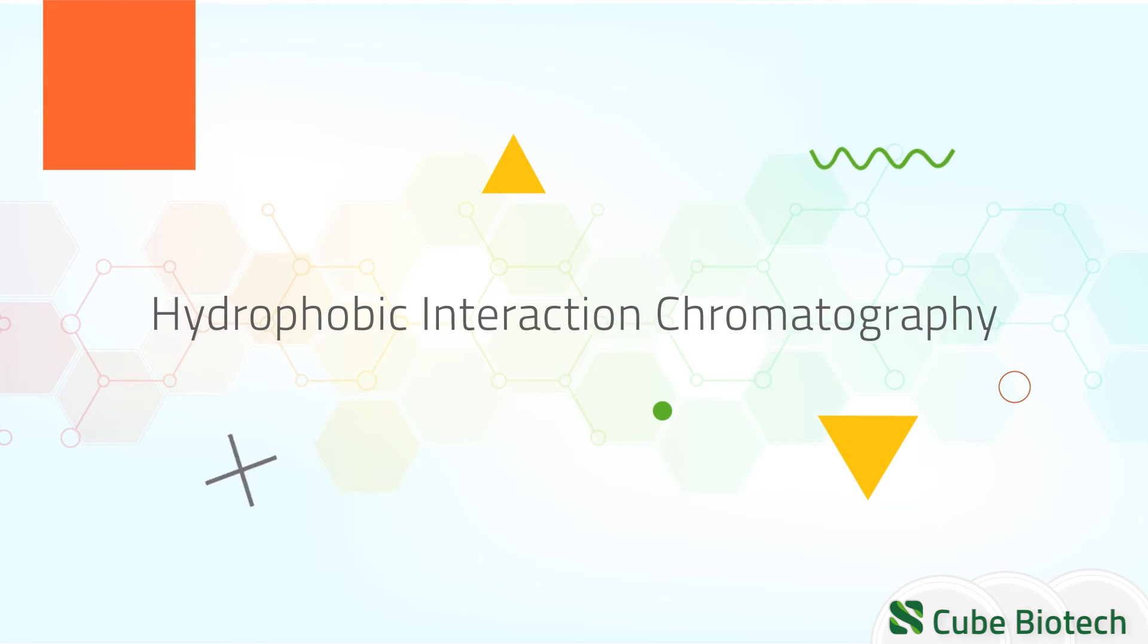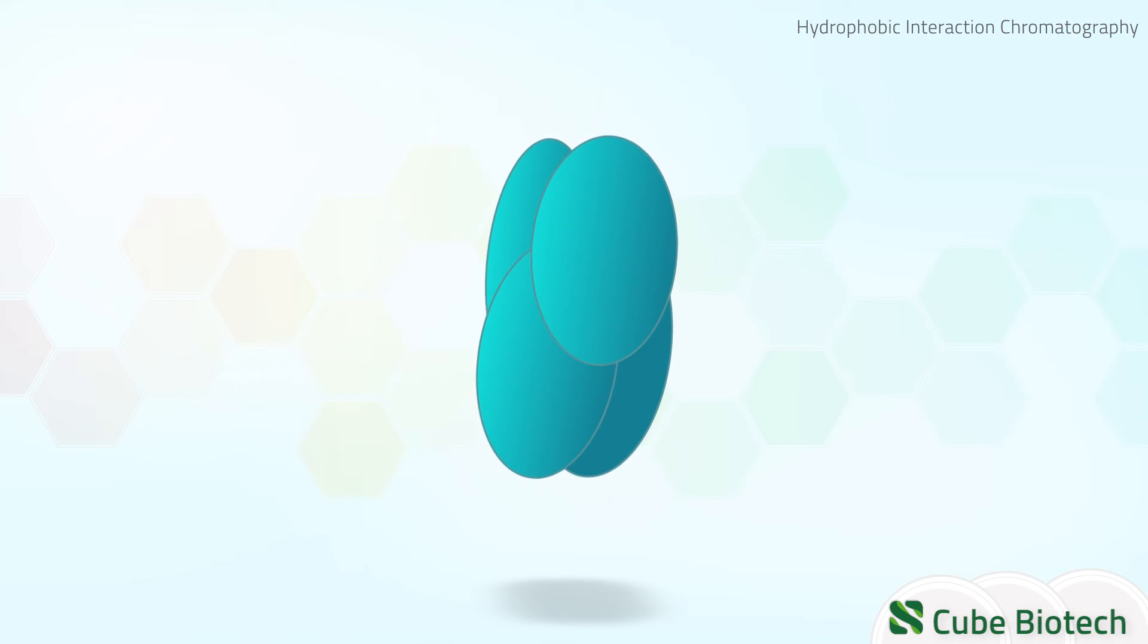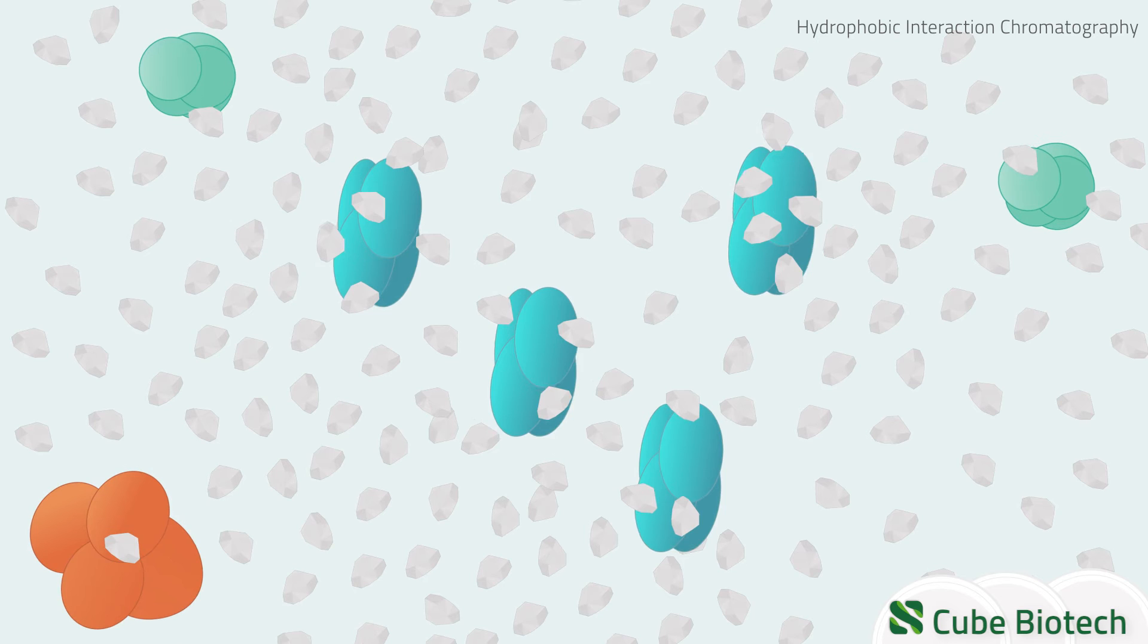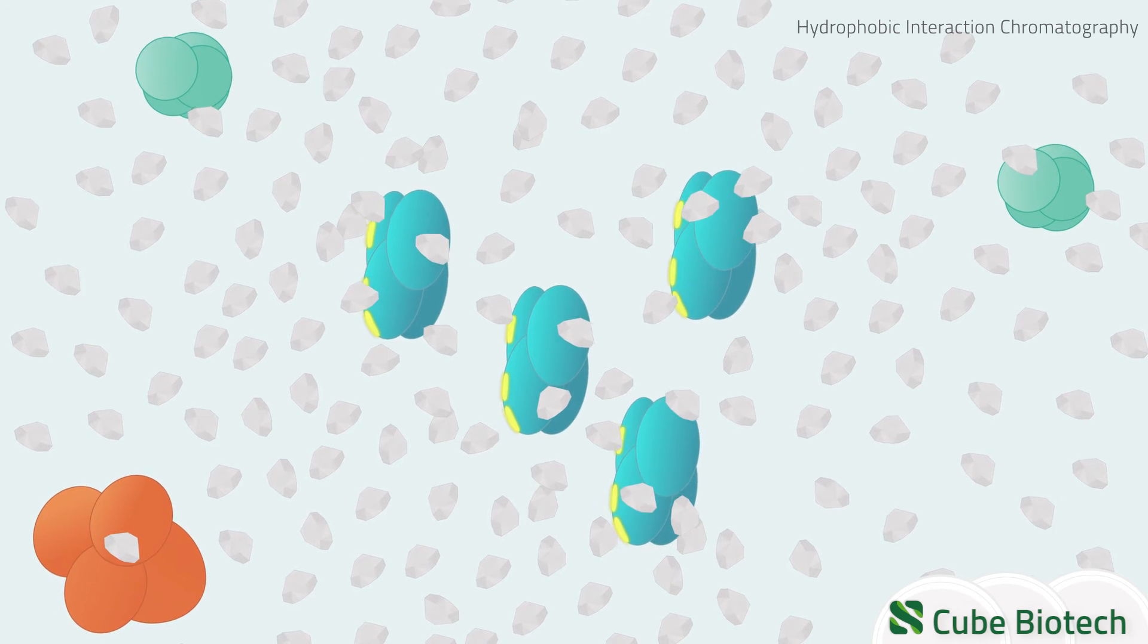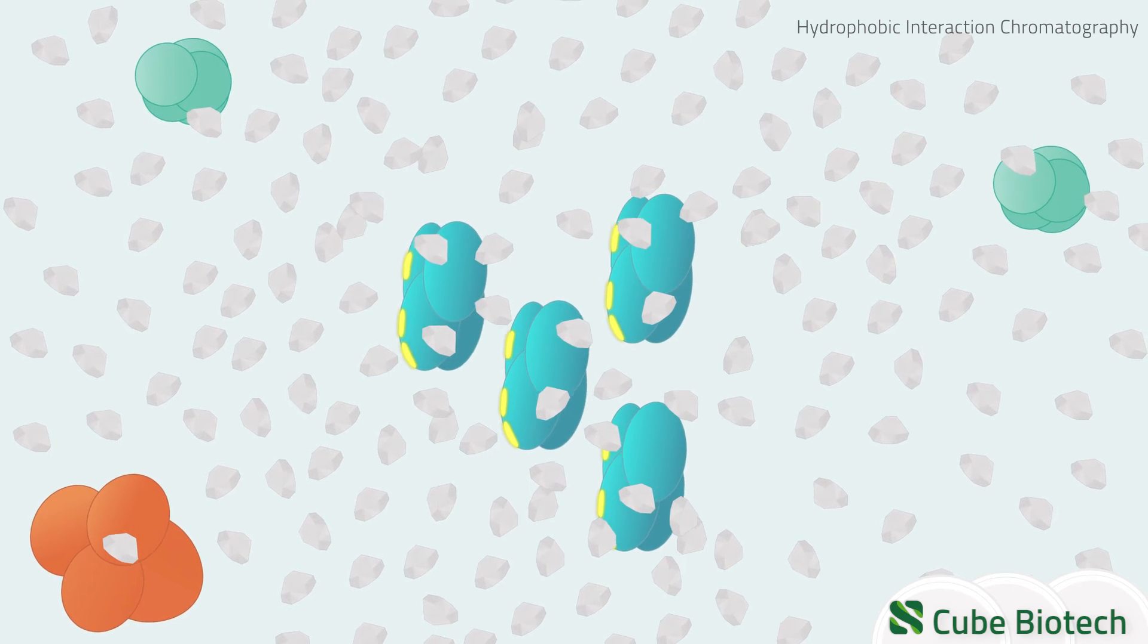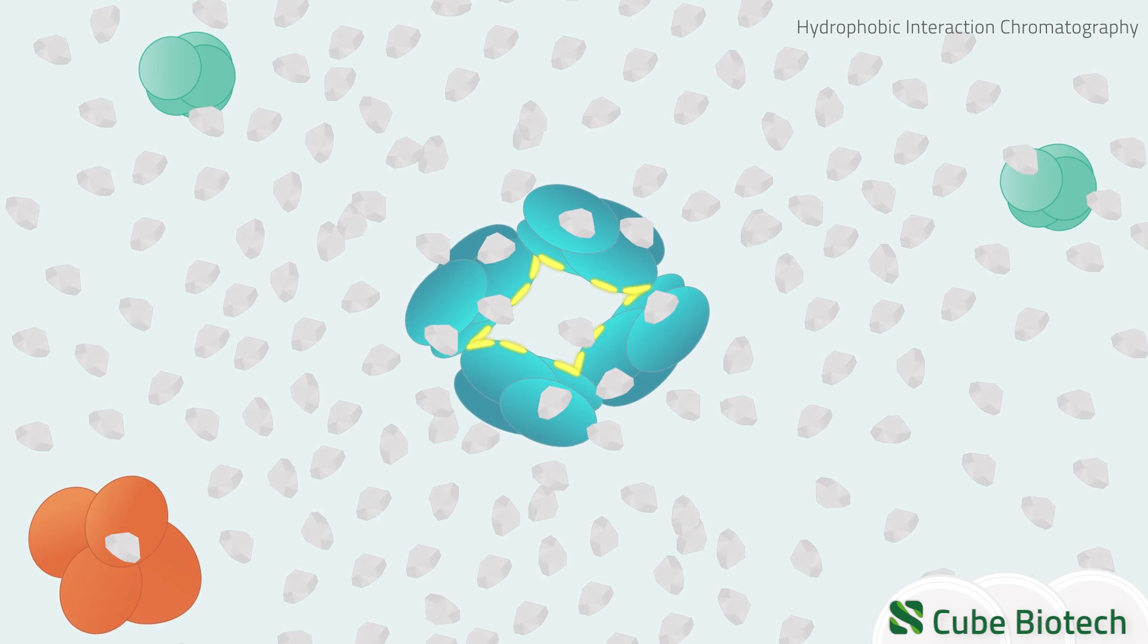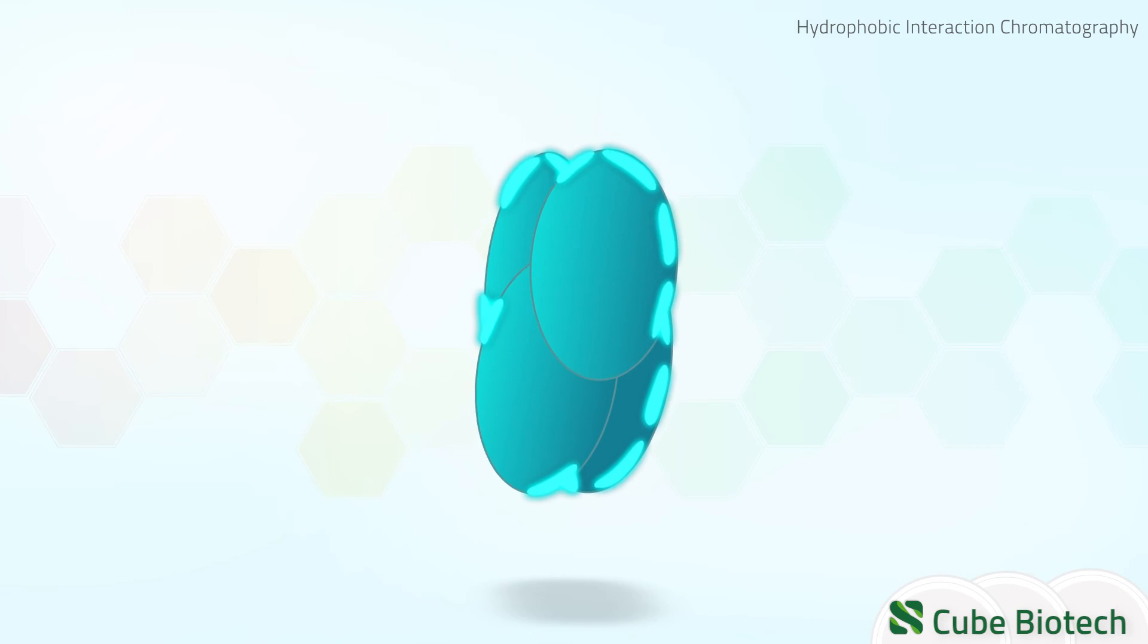Hydrophobic interaction chromatography takes advantage of the protein's hydrophobicity. Remember the technique of salting out? In which a high salt concentration leads to the withdrawal of the hydration shell and enables the hydrophobic regions of the protein to associate? Well, this is exploited here.